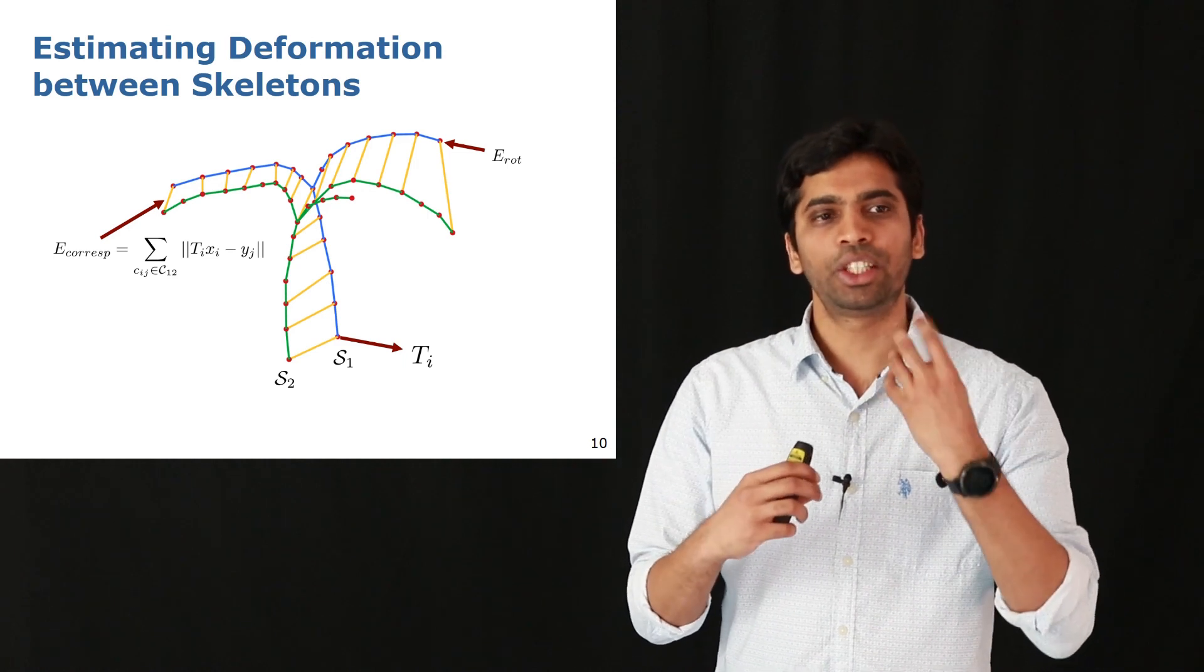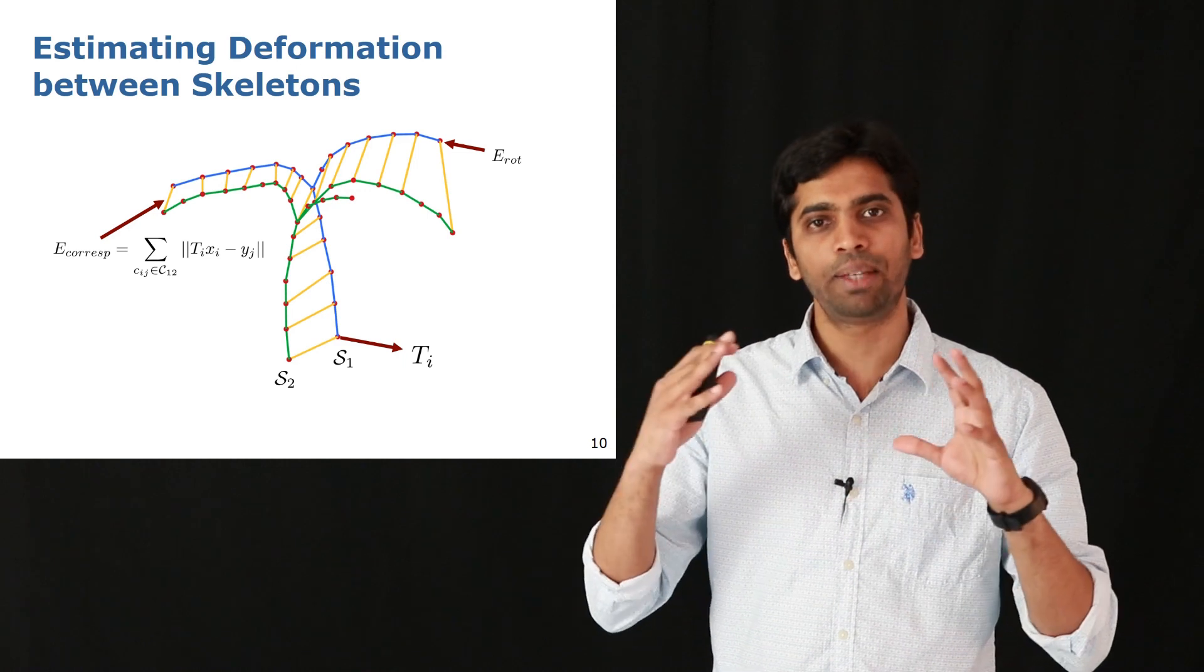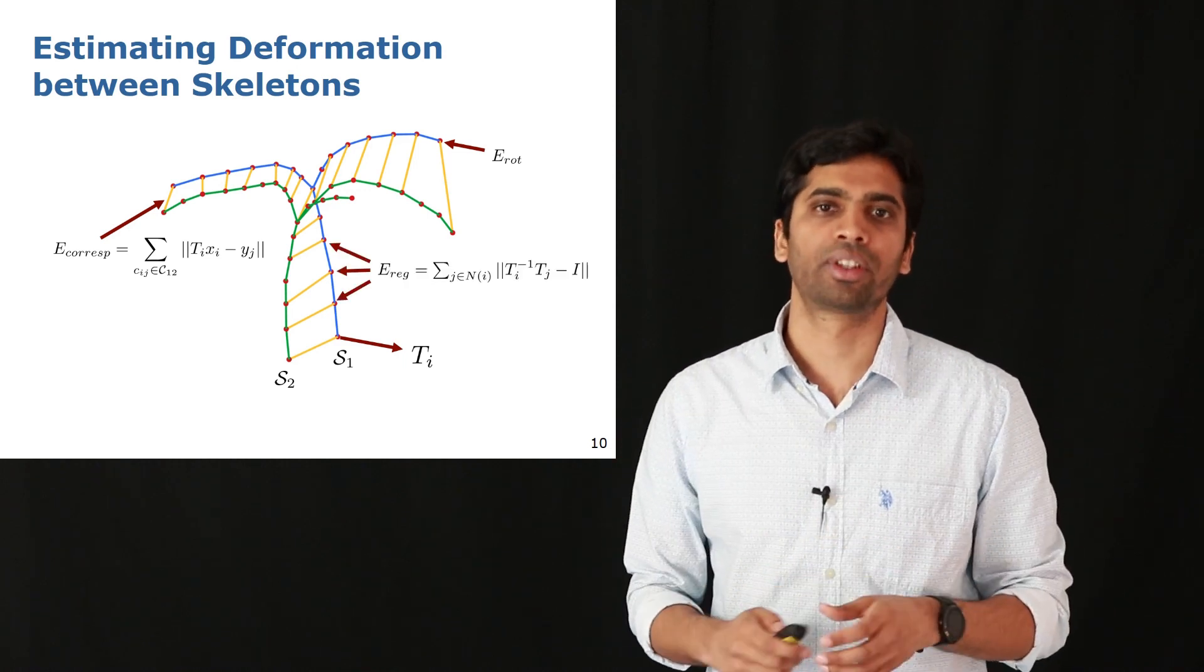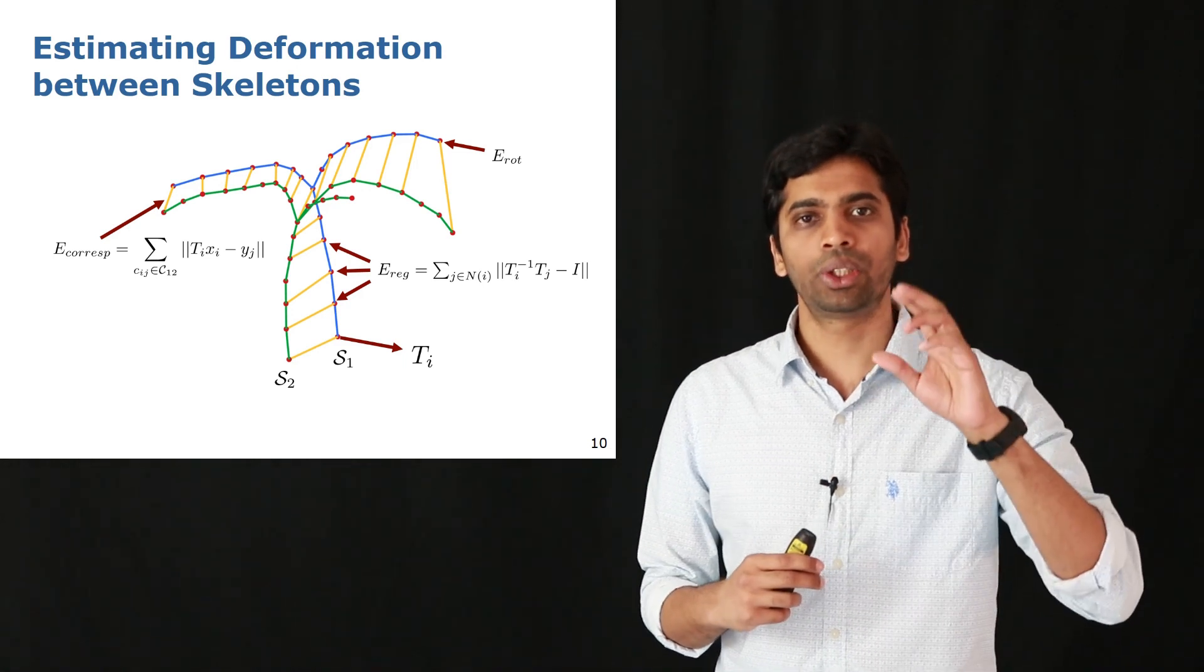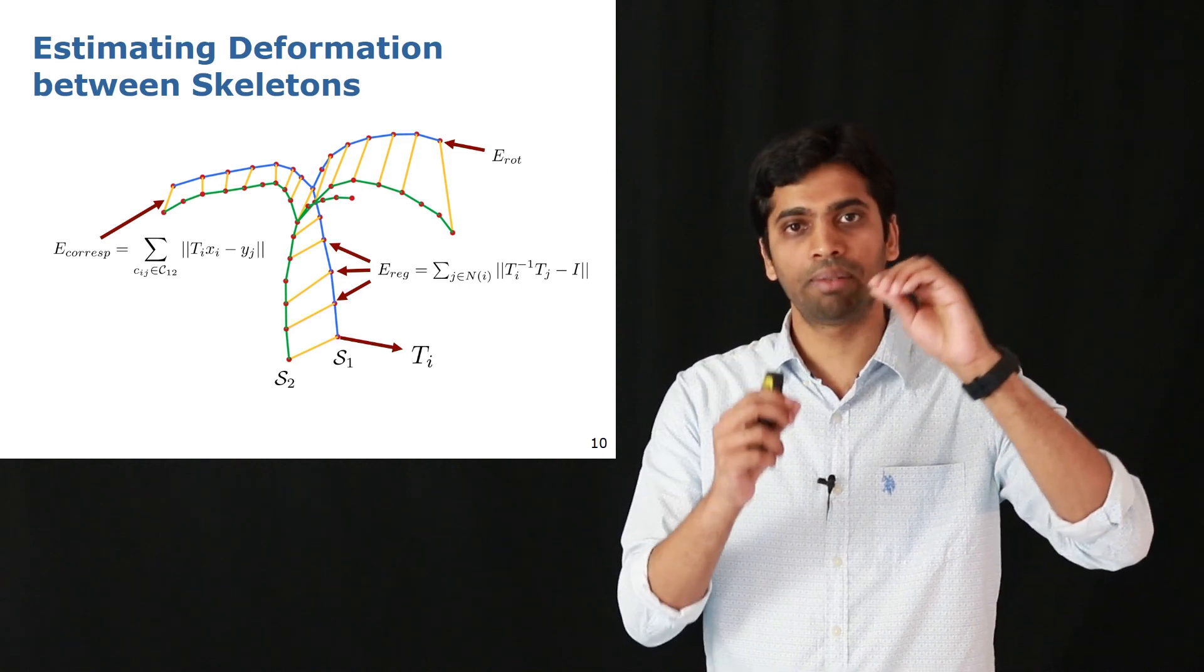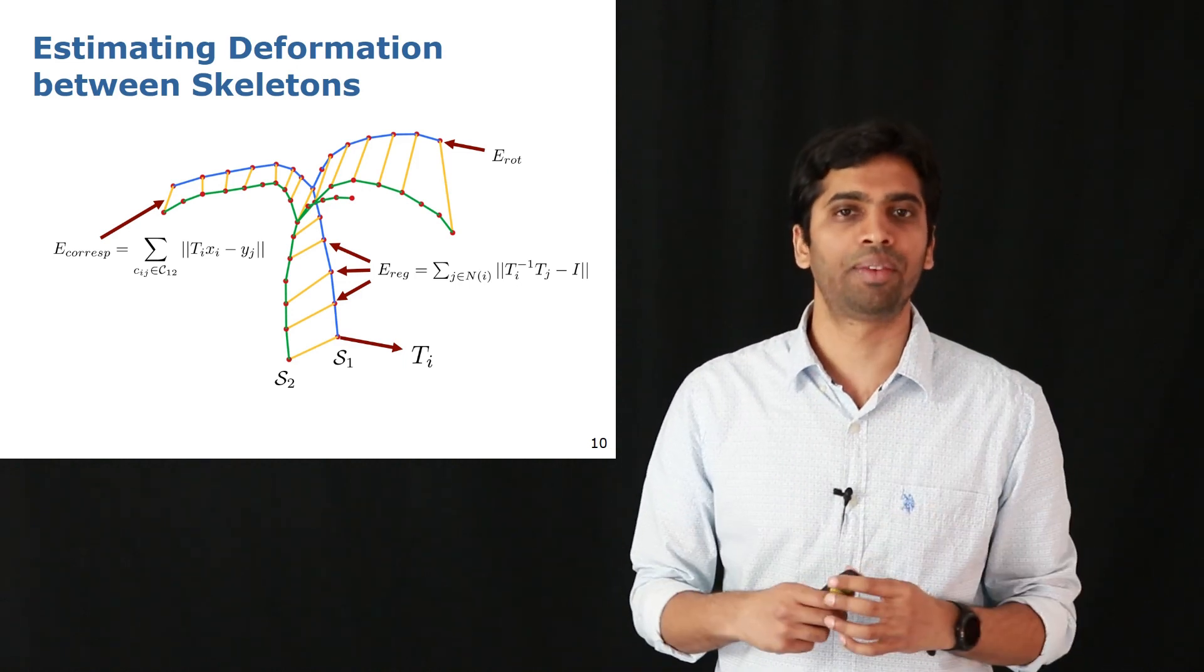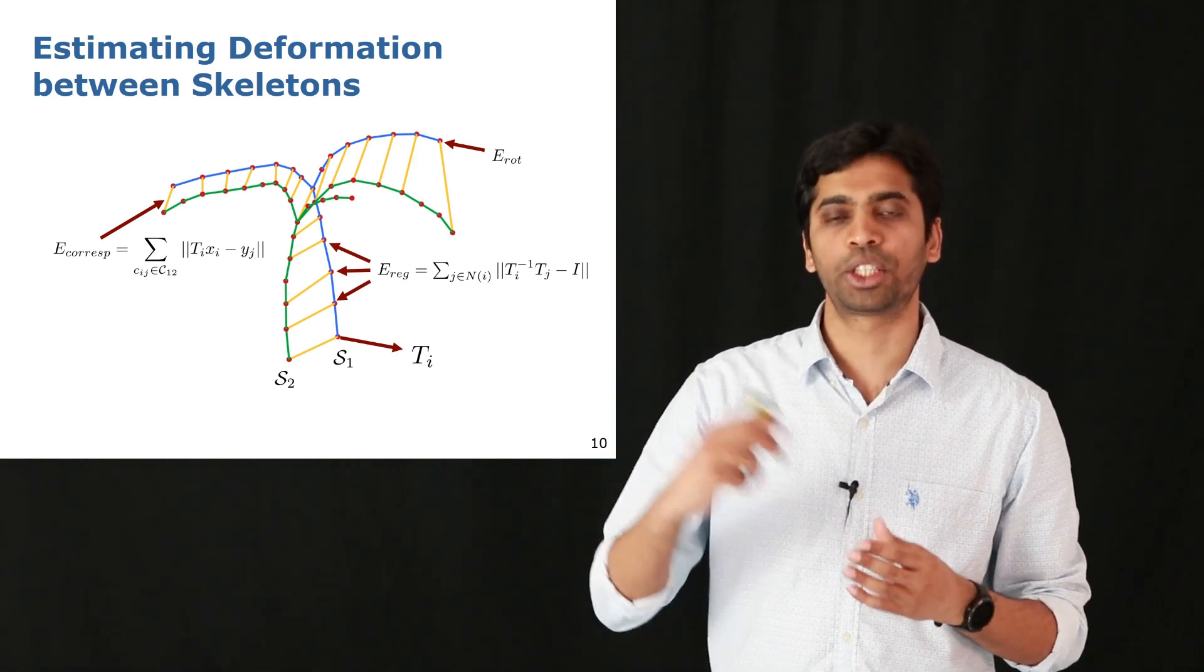This is necessary because it leads to a more natural looking deformation between the skeletons and keeps the shearing effects in check. Finally we have a regularization term which ensures that the affine transformations or parameters for nodes which are nearby on the skeleton are similar. This also results in a smooth deformation between skeleton S1 and S2.